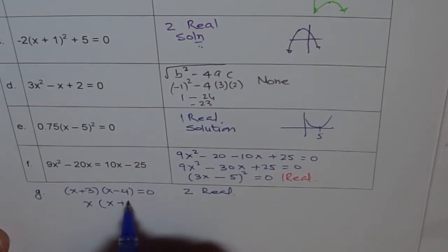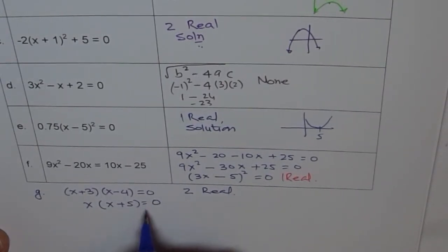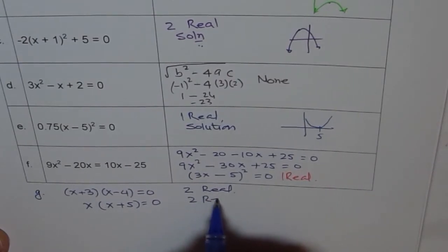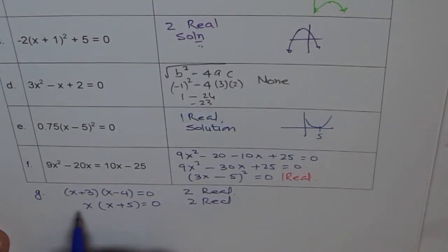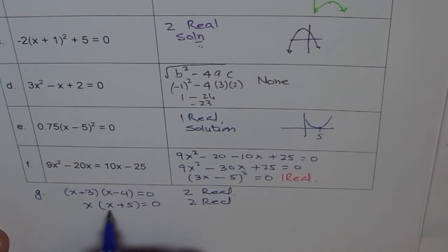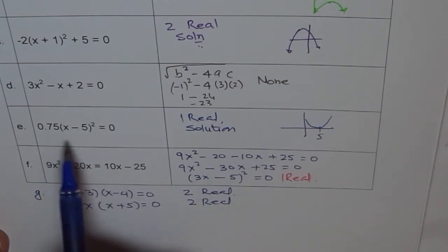And if I write just x(x + 5) = 0, again two real solutions. Why two in this case? x = 0 is one and x = -5 is the other one. Factored form is quite easy to figure out.